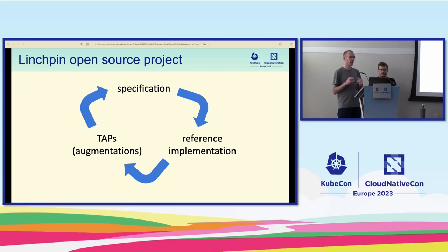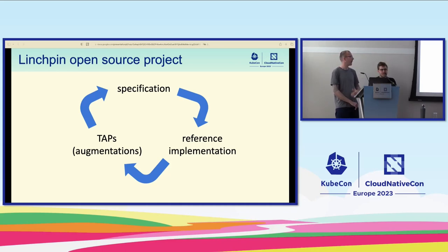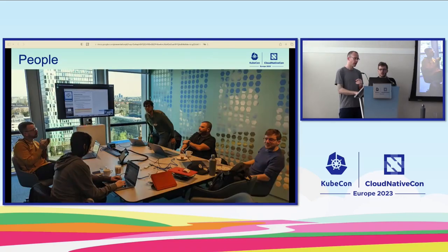We have a TAP — or PEP-style — augmentation process where we can propose and peer review possible additions to the specification. Then we have a reference implementation, which is an exemplary implementation demonstrating how to implement TUF and the primitives and procedures within the specification. These three projects have a very symbiotic relationship — they all feed into each other. There are other implementations of the TUF specification, several of which are open source, but not all have this same interactive nature.